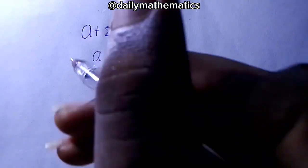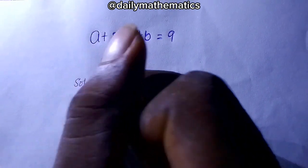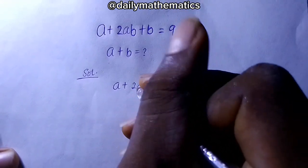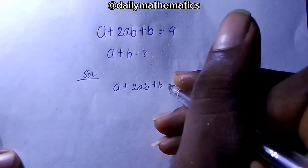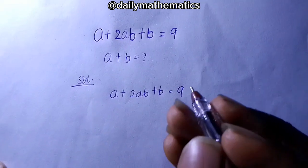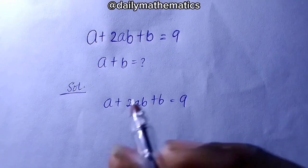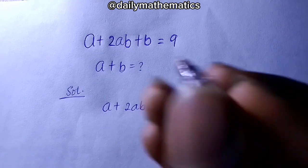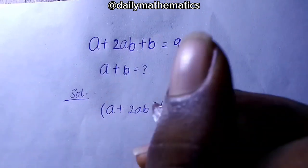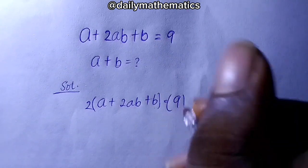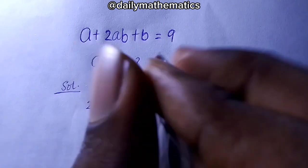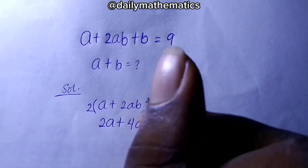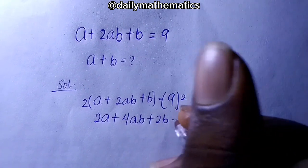Solution. Let's write the question: a plus 2ab plus b equals 9. How do we go about this? First things first, we want to factorize, but we first want to multiply both sides of the equation by 2. So when we multiply by 2, it gives us 2a plus 4ab plus 2b equals...